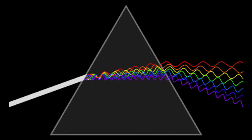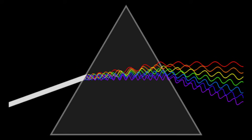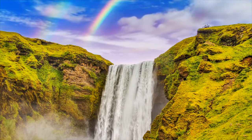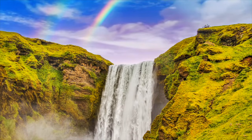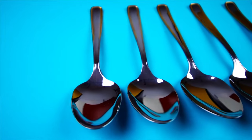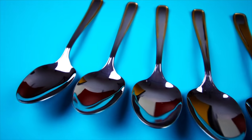Light can also bend when it hits certain objects. This is called refraction. Refraction is what makes rainbows. Light bends when it hits water droplets in the air. Curved surfaces, like a spoon, can also cause light to refract.